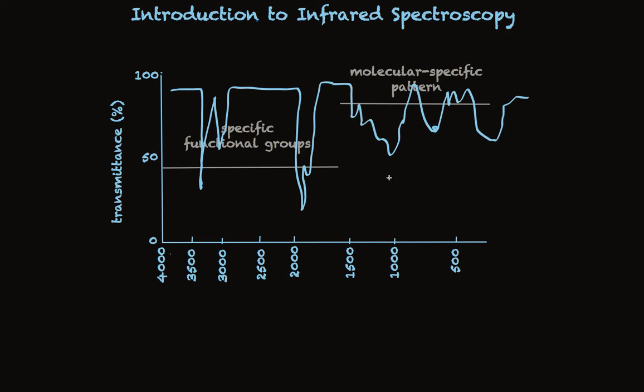On the other hand, the region on the right is a complex pattern that's typically pretty difficult to interpret in terms of specific functional group absorptions. But rather, it has a distinctly different use. This is called the fingerprint region, and this region functions just like fingerprints for people.